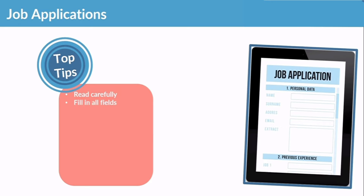Next, fill in all the fields - every empty section. Answer all questions completely, accurately, and truthfully. When something doesn't apply to you, write NA - not applicable - don't just leave it blank. Then check your answers for correct spelling, grammar, punctuation, and accuracy. Using NA tells the employer you've seen the question but it doesn't apply to you.